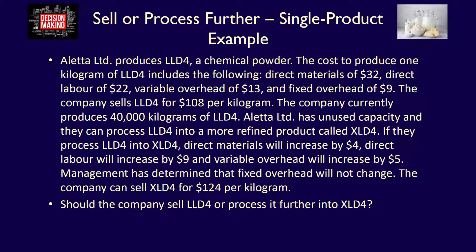Aletta Limited has unused capacity and can process LLD4 into a more refined product called XLD4. If they process LLD4 into XLD4, direct materials will increase by $4, direct labor will increase by $9, and variable overhead will increase by $5. Management has determined that fixed overhead will not change if processed further. The company can sell XLD4 for $124 per kilogram.